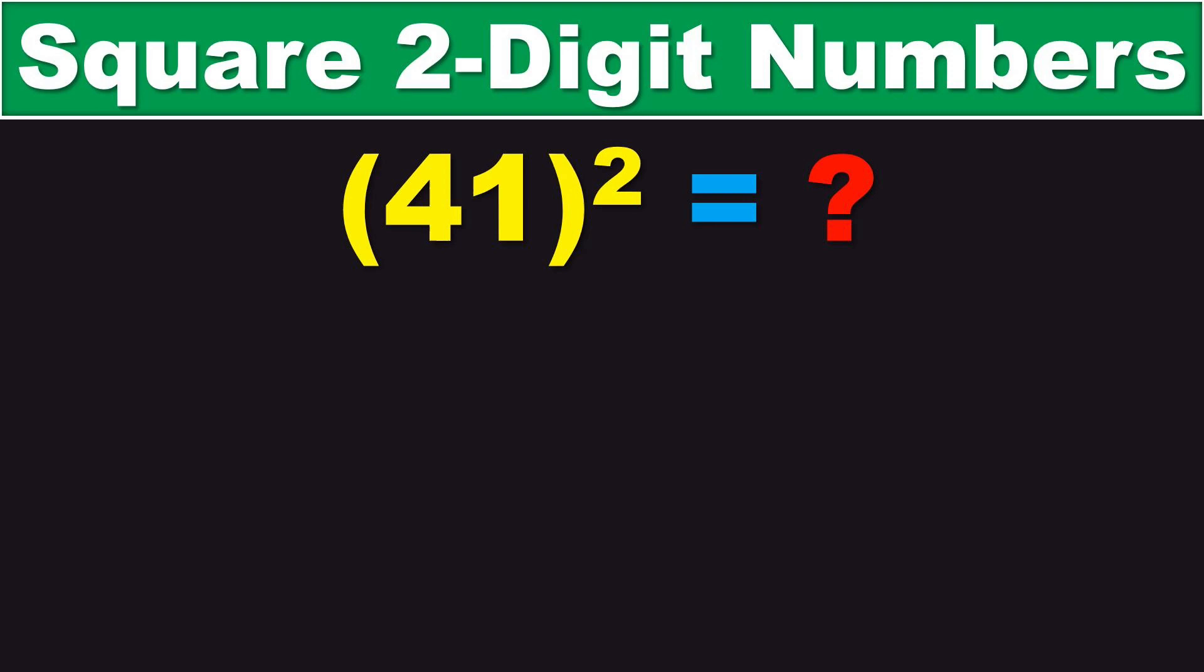In this case, the nearest multiple of 10 to 41 is 40. The next thing to do is to take the difference between 41 and 40, which is 1, and add that to the original number.